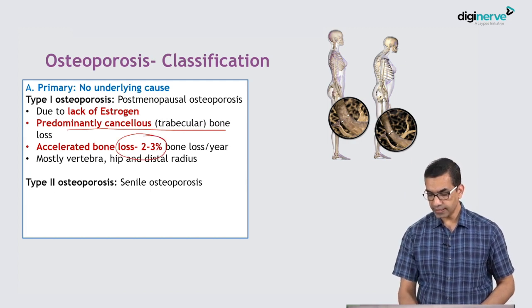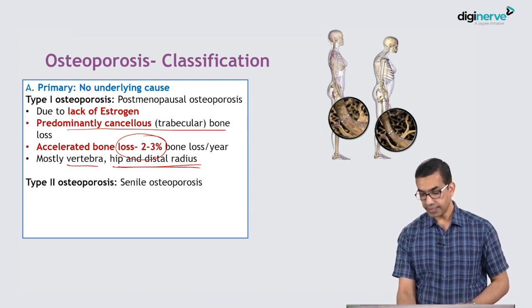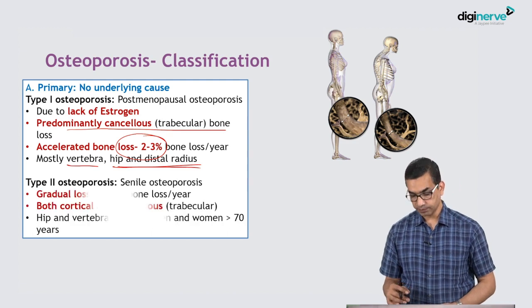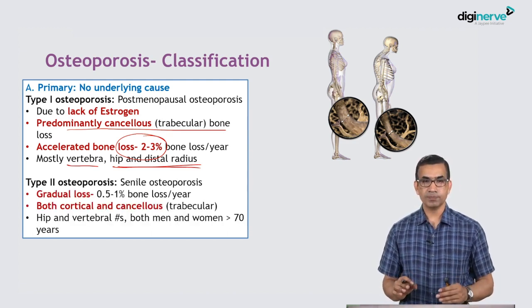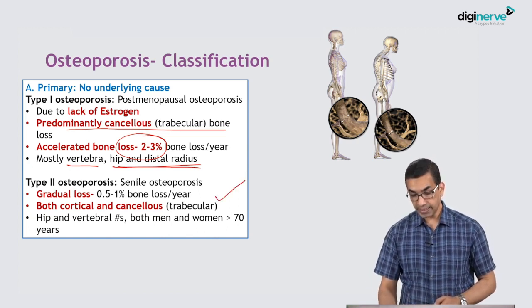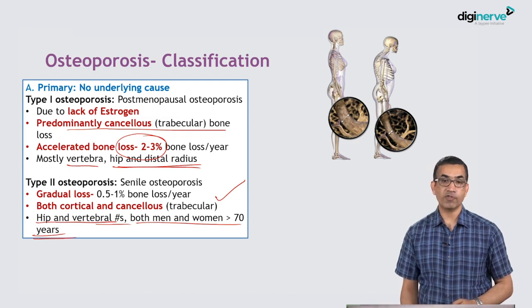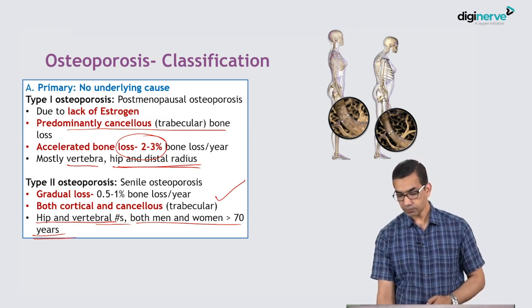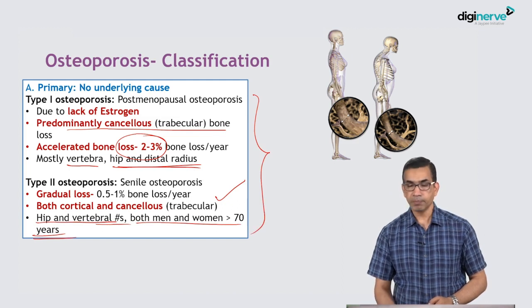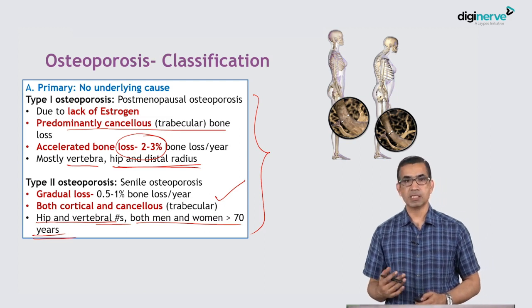The bone loss in Type 1 is quite accelerated at about 2 to 3% per year, mostly affecting vertebra, hip, and distal radius — the cancellous bones. Senile osteoporosis is a bit slower at about 1 to 1.5% bone mass per year, with both cortical and cancellous affected, and hip and vertebral fractures in women above 70 years. This differentiation matters because we treat women differently — selective estrogen receptor modulators and hormone replacement therapy are used in women but not in men.